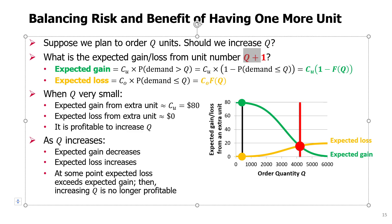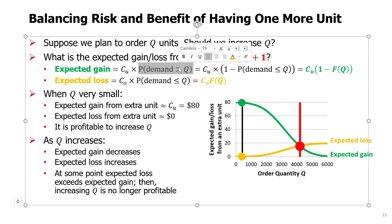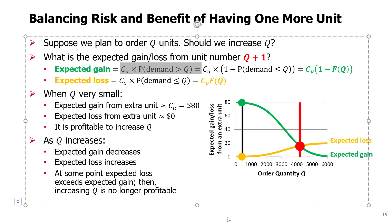Unit Q+1 can bring us an additional gain if we sell it. The profit from a sold unit is CU, the underage cost. So the expected gain from selling unit Q+1 is CU multiplied by the probability that demand is higher than Q — meaning demand is at least Q+1 units, so we will actually sell that unit. We can express this as an expected value: we get profit CU if we sell the unit, and zero gain if we don't.